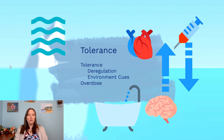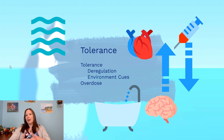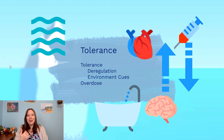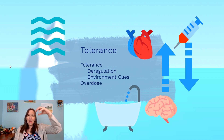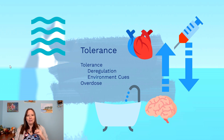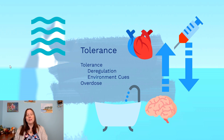Overdoses can happen very easily in a scary way if environmental cues change once someone has built up significant tolerance to a potent drug like fentanyl or heroin. Say the bathroom is unavailable and they administer heroin in their bedroom instead — without those environmental cues, they don't get that endogenous chemical release winding them up. There's no compensatory 'up' arrow, only a 'down' arrow, which takes them lower than ever before.